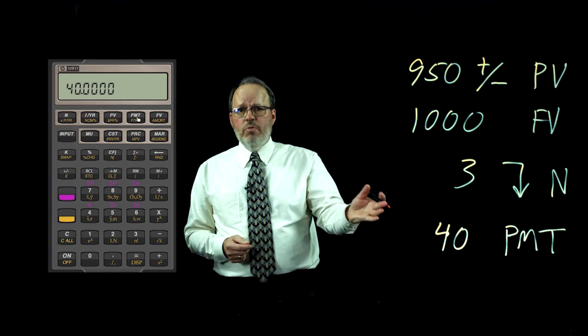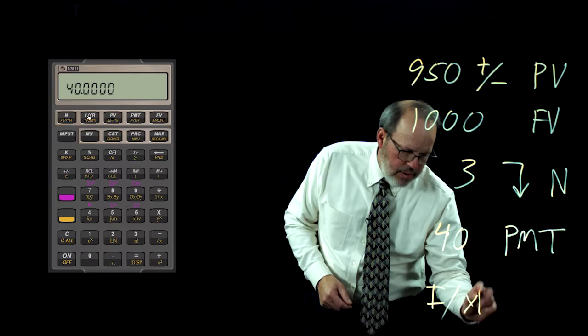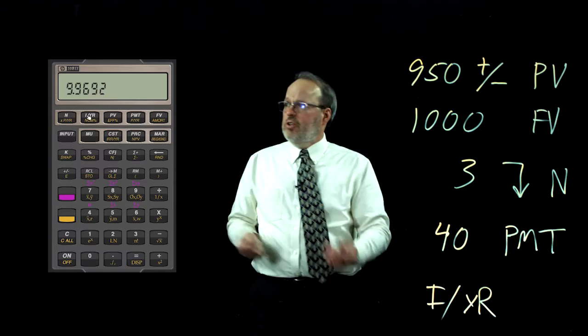Those are the four entries we make, and then we solve for interest rate per year — which in this case gives us the yield to maturity. When you do that, you should come up with 9.97%.